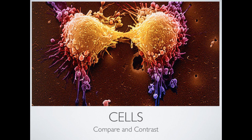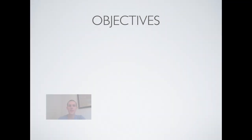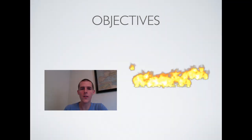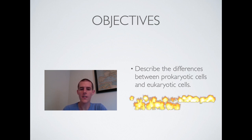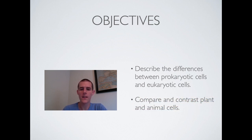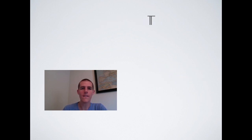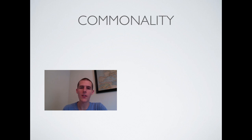As always, we're going to start out with some objectives for the day. Describe the difference between prokaryotic cells and eukaryotic cells, and compare and contrast plant and animal cells. Now this should be a review from your basic biology course that you took once upon a time. So let's go ahead and get going, starting with what they have in common.